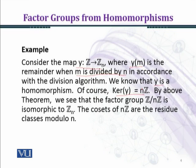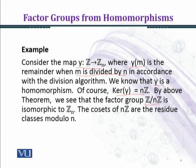We have already proved this isomorphism before. The class nZ represents the kernel, because the identity element in Z_N is nZ. Therefore the kernel of Y is nZ, and all elements map to the 0-class. By the above theorem, the factor group Z/nZ is isomorphic to Z_N. So nZ represents the kernel of Y, and the cosets of nZ are the residue classes modulo N.